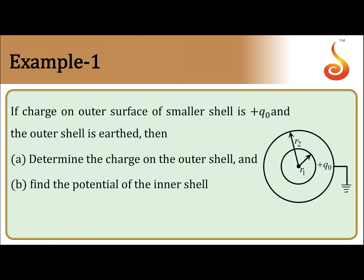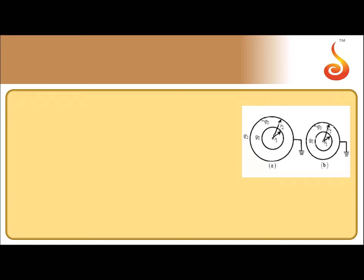When +q₀ amount of charge is given to the outer surface of the inner shell, it will induce an equal and opposite charge on the inner surface of the outer sphere. So if this charge is q₀, there will be -q₀ on the inner surface of the outer shell. Due to this, some charge q₂ is generated on the outer surface, but the outer surface is grounded, so the outer surface will have zero charge.